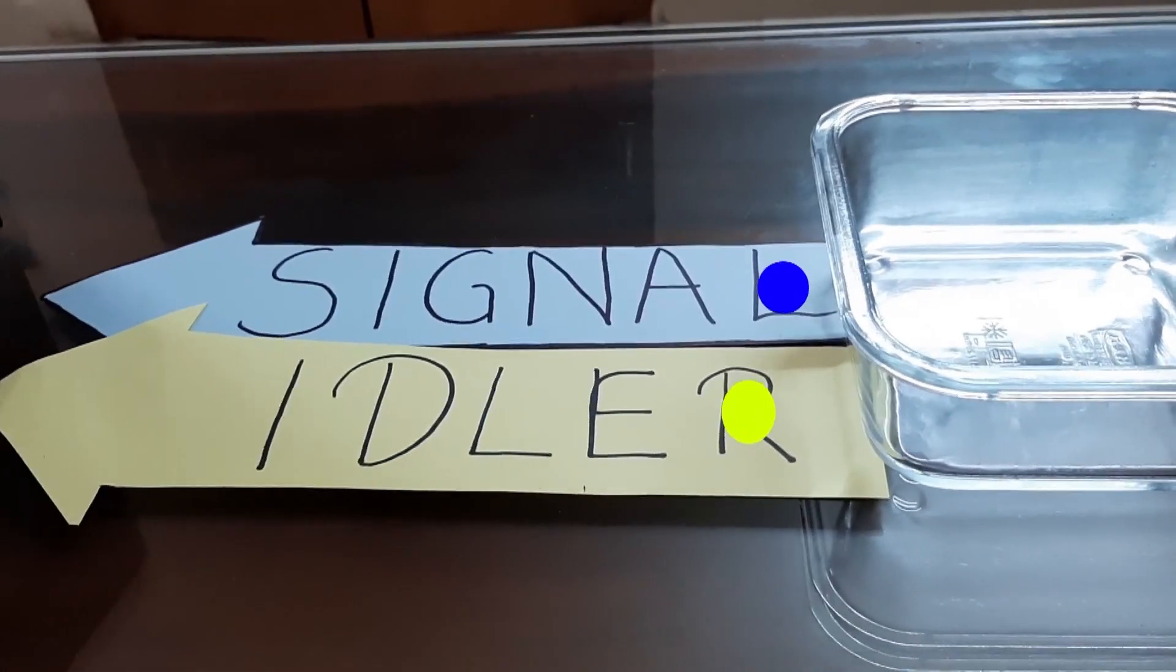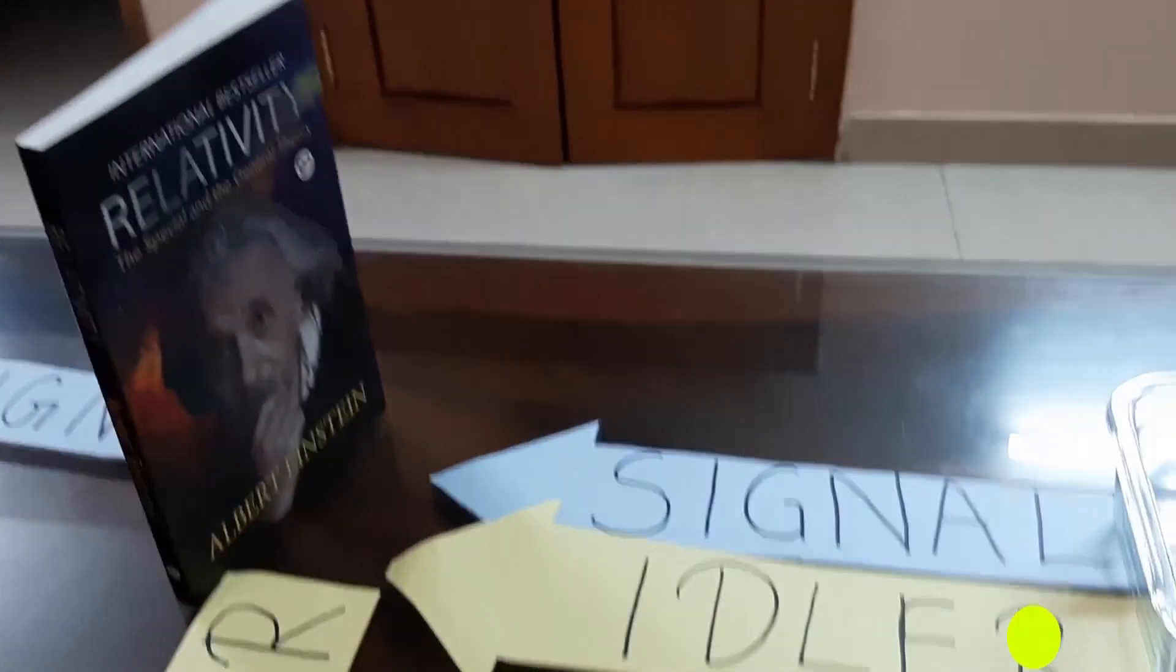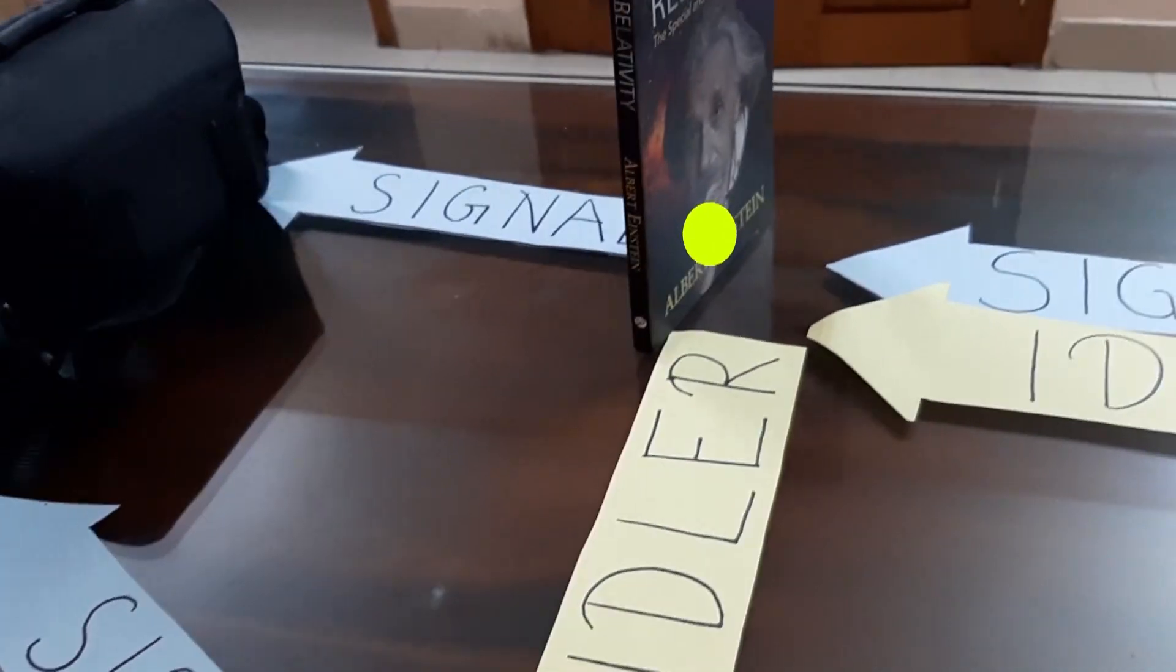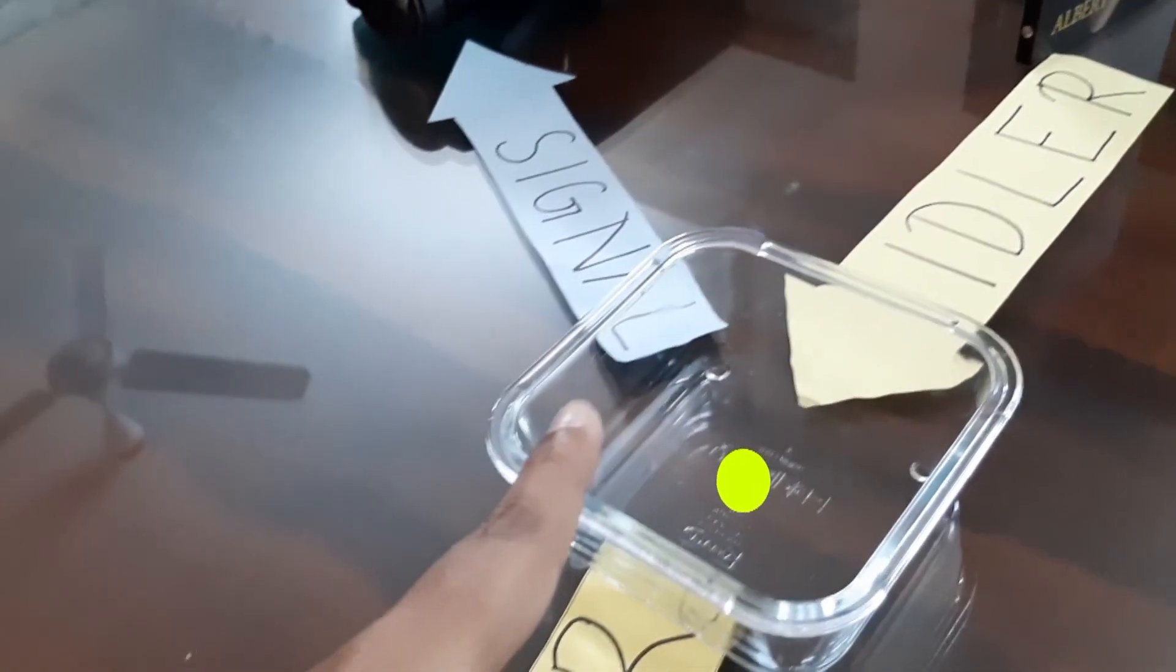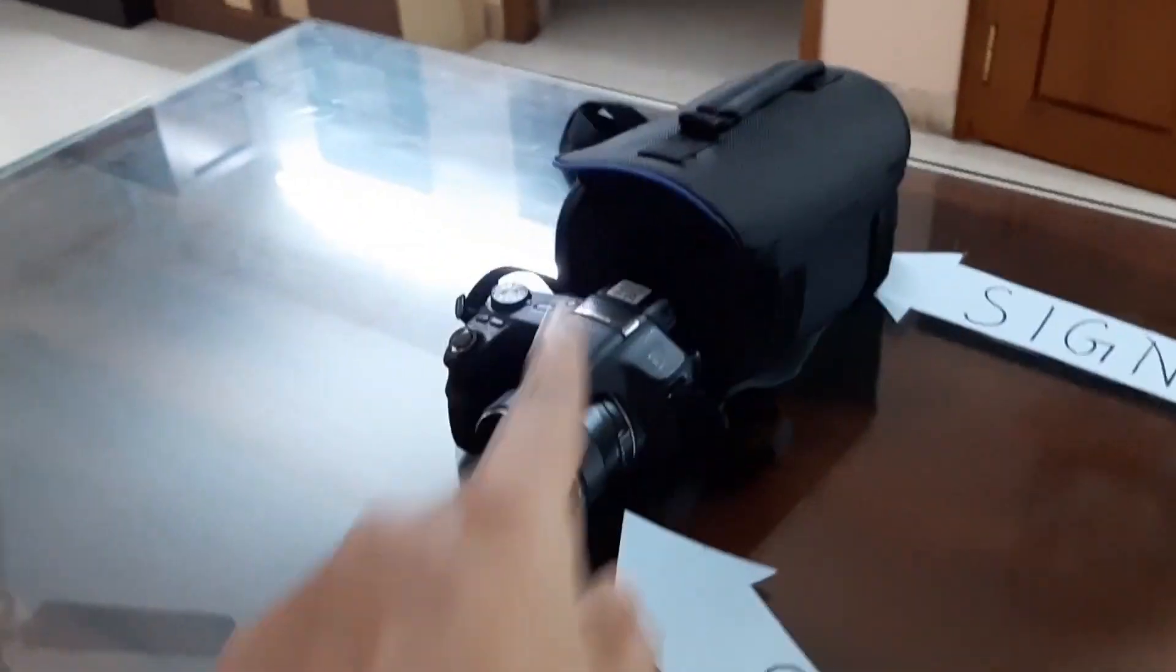Moving on, the signal photon passes straight through the object, whereas the idler photon interacts with the object and then passes through another crystal where it splits into the signal and idler photon. Both the signal photons are then captured by the camera.